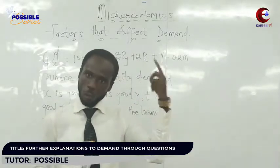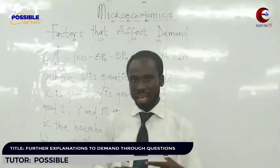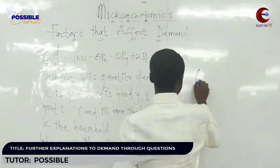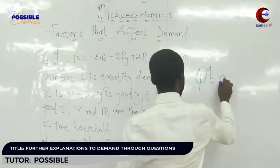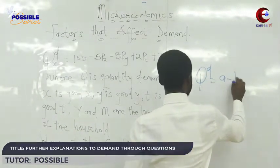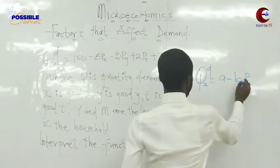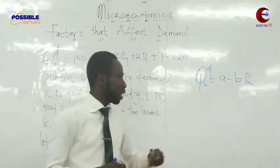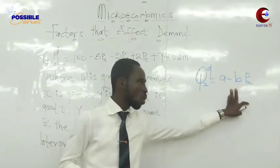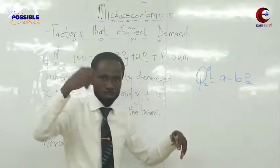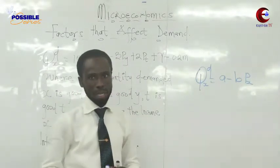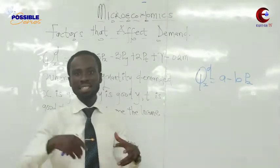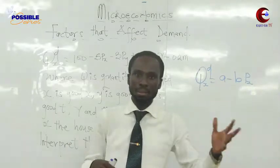Before that, we were looking at the demand function as QD equal to A minus BP. And we said that this was a simplified form — the demand function whereby the own price has been given. And that is why we have change in demand and a change in quantity demanded.